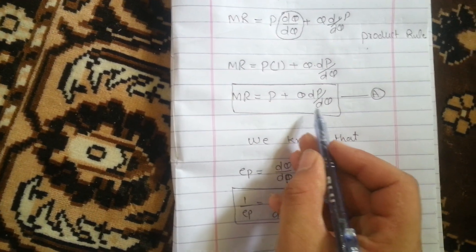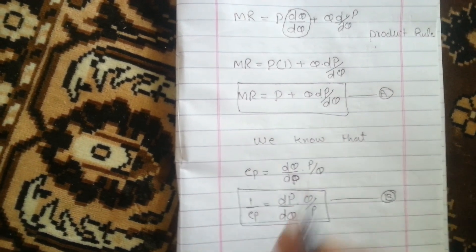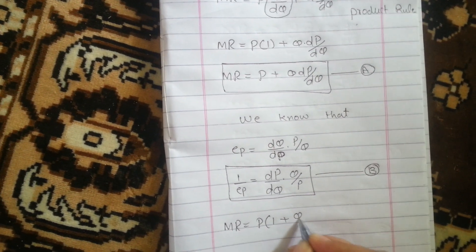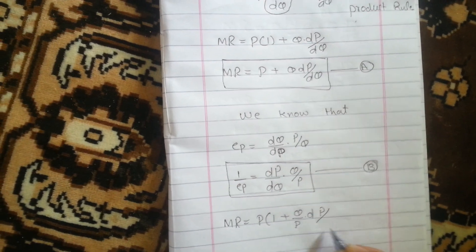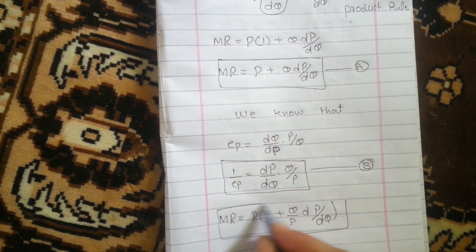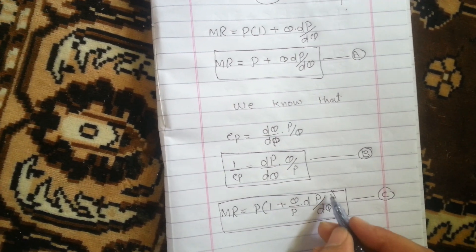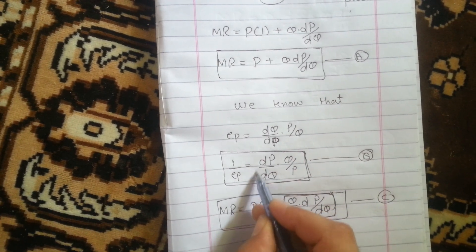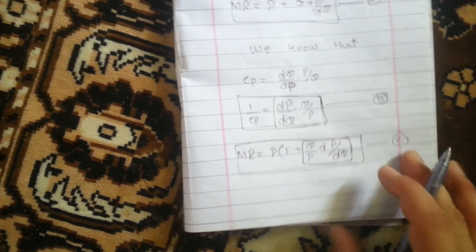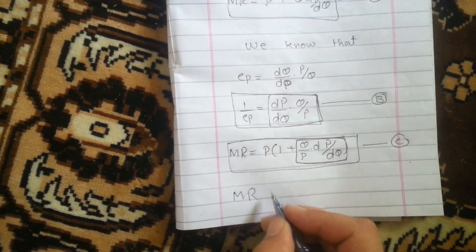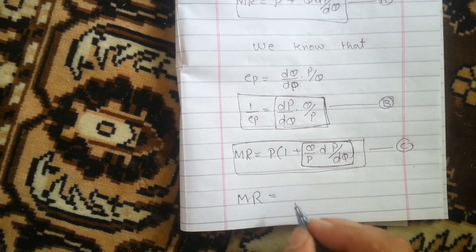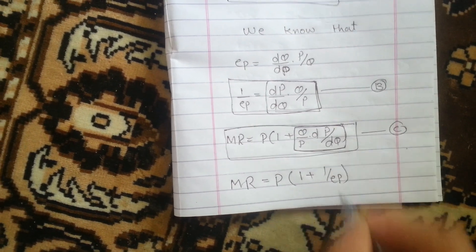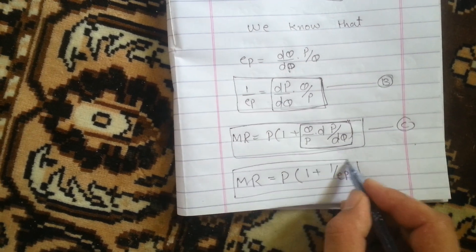Coming back to Equation A, we take P as a common factor. Equation A becomes: marginal revenue equals P times [1 plus (Q/P)(dP/dQ)]. This is Equation C. The bracketed part of Equation C matches Equation B, so substituting gives us Equation D: marginal revenue equals P times [1 plus (1/price elasticity of demand)].